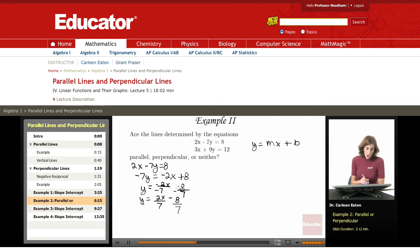So this is in y equals mx plus b form. Now, the second one, 3x plus 9y equals 12. I'm going to subtract 3x from both sides. That will give me 9y equals negative 3x plus 12.